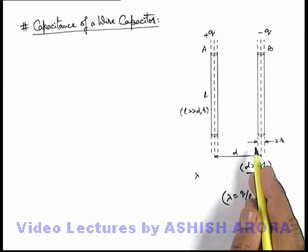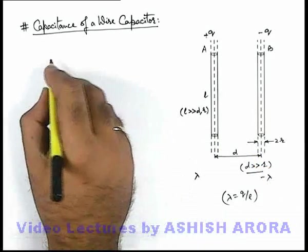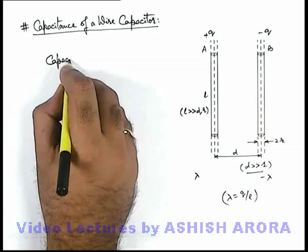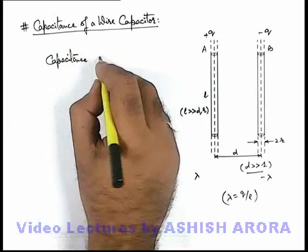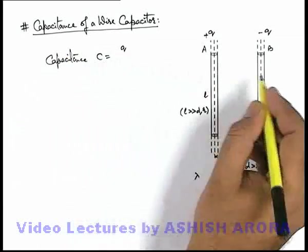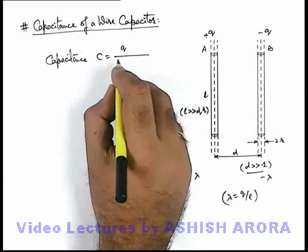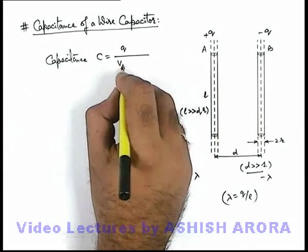Now in this situation, if we wish to calculate the capacitance, then capacitance of this system C can be written as the amount of charge which is supplied divided by the potential difference V_A minus V_B.